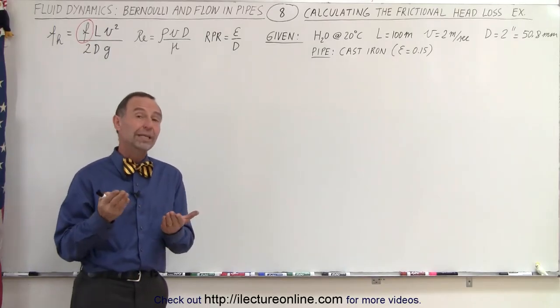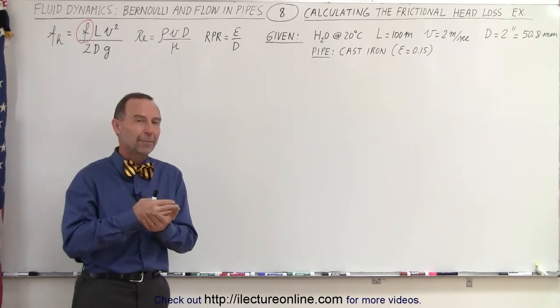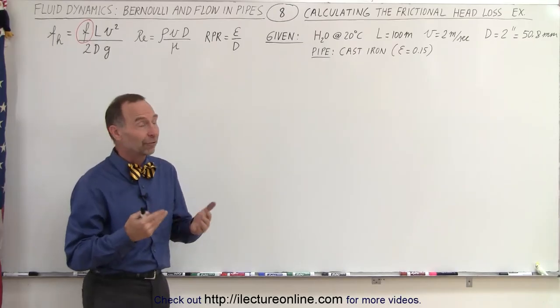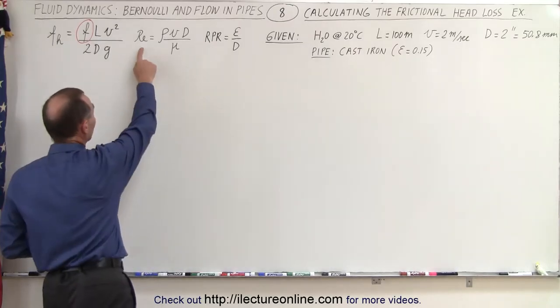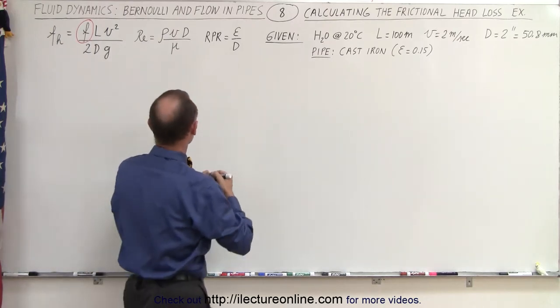Well first of all we need to determine if the flow is going to be laminar or turbulent, and we can figure that out by calculating the Reynolds number. So let's start with the Reynolds number.